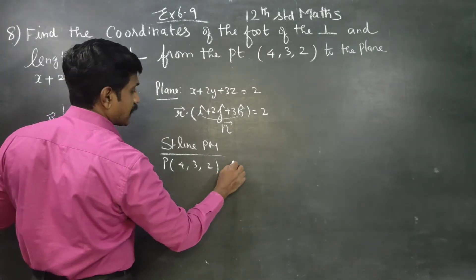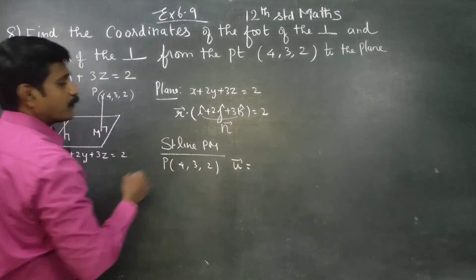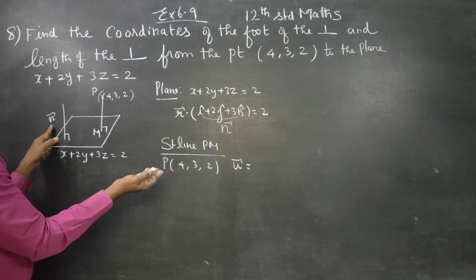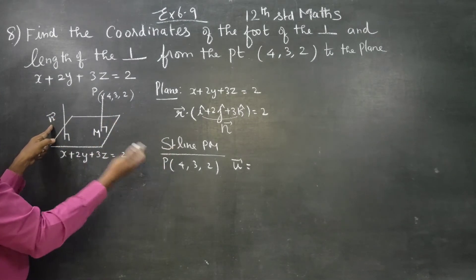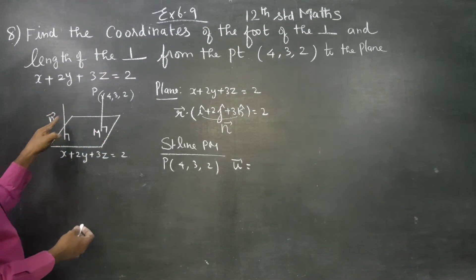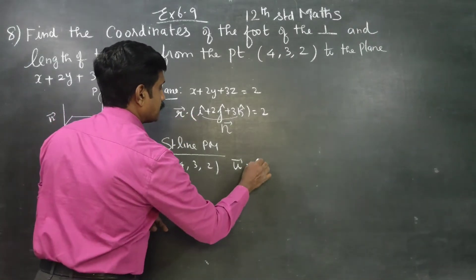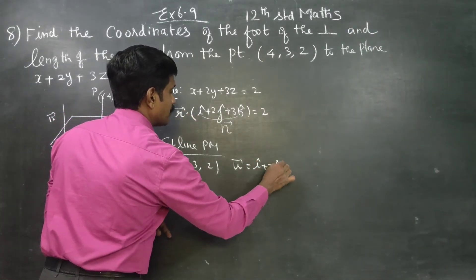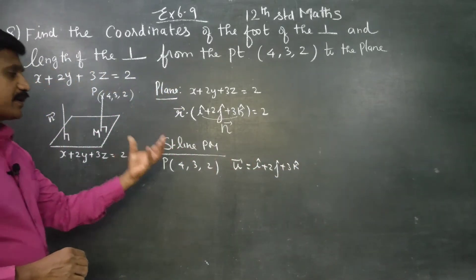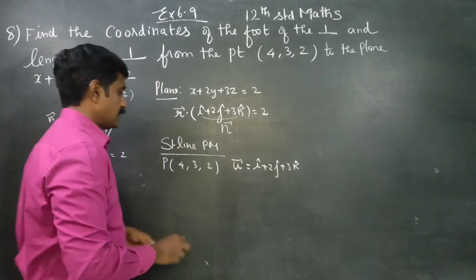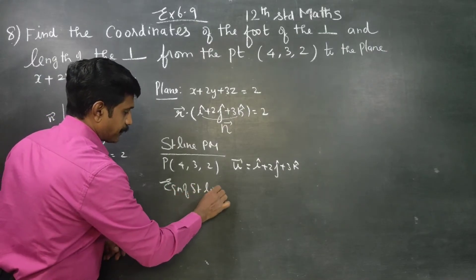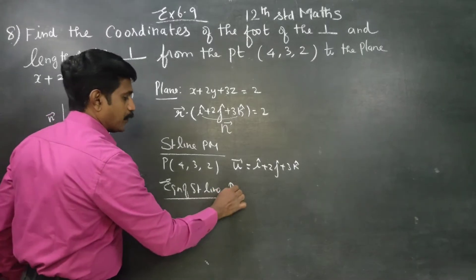We use the n-vector as the direction. The line PM is parallel to the normal vector n. So the direction ratios (parallel vector) are i plus 2j plus 3k. The straight line PM is parallel to the normal vector.